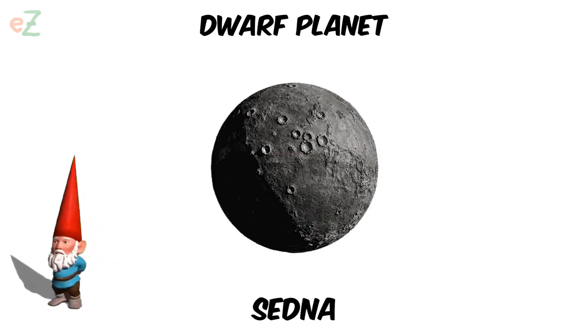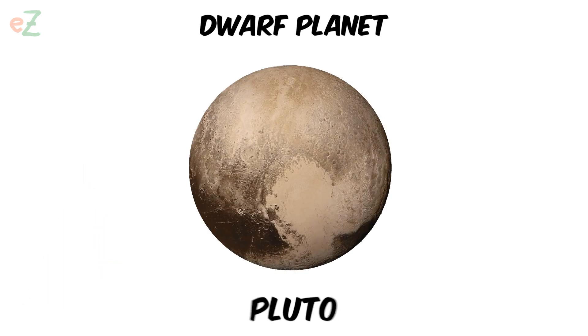A dwarf planet is much smaller than a planet — smaller even than Earth's moon. But it is not a moon. Pluto is the best known of the dwarf planets.